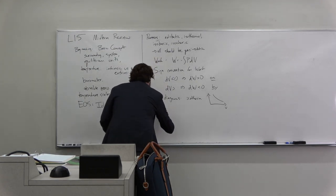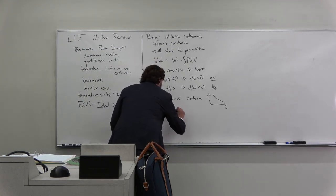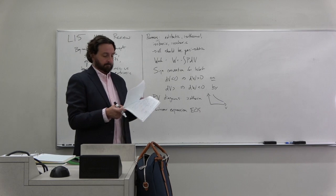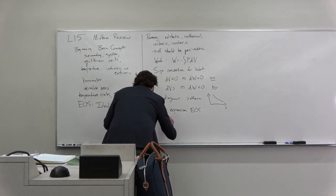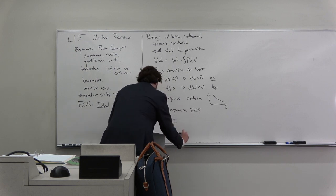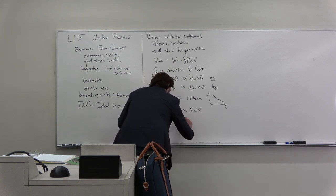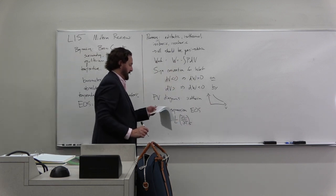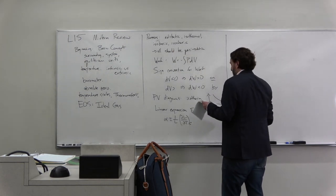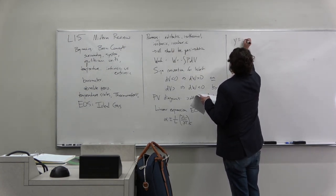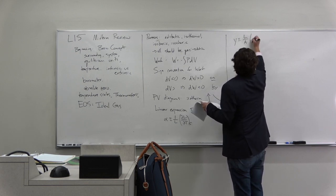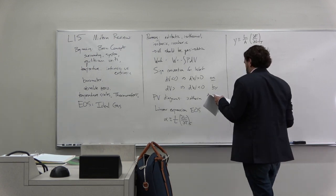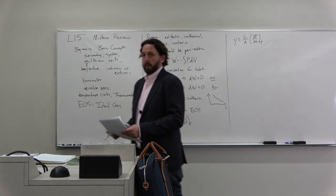We did our linear expansion equation of state for a solid or a liquid. We came up with the coefficient of thermal expansion, which was partial l partial t constant f, normalized to that. We had our Young's modulus, which was defined to be l over a, partial f partial l constant t, which is related to our one-dimensional compressibility.